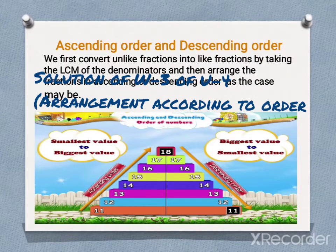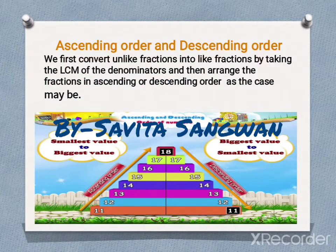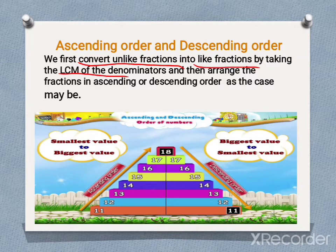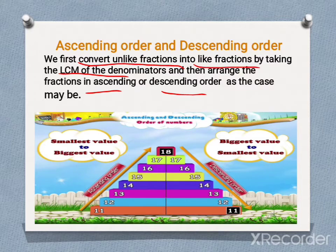Good morning students. Welcome back in e-learning class by Savita Sangman. Today you will learn how to arrange fractional numbers in order. First of all, you have to convert unlike fractions into like fractions by taking LCM of the denominators. Then arrange the fractions in ascending or descending order. You can change unlike fractions into like fractions using LCM.